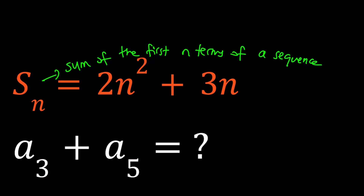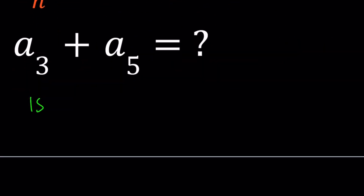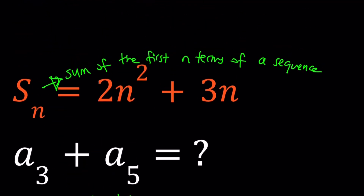I'll be presenting two methods. The first method actually deals with a special kind of sequence, which we'll talk about, and then I'm just going to ask you why that's the case — something to think about. So, first method: I'm just claiming that a sub n is an arithmetic sequence.